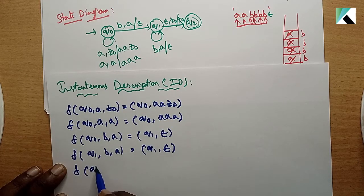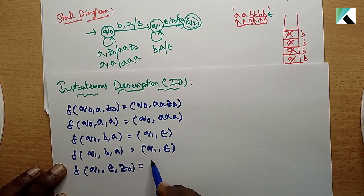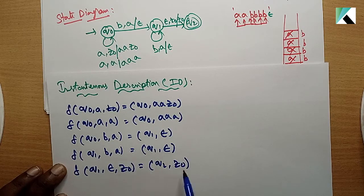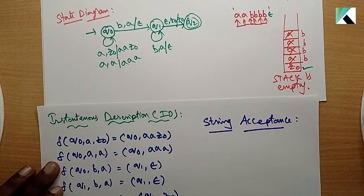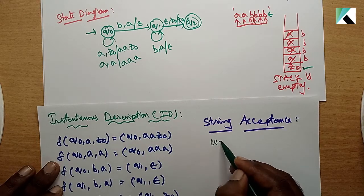Finally, epsilon in q1 with z0 on top of the stack will go to q2 with z0. This is the final state. Check if the string is accepted or not.